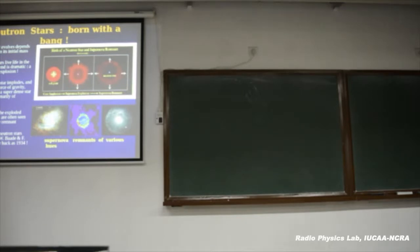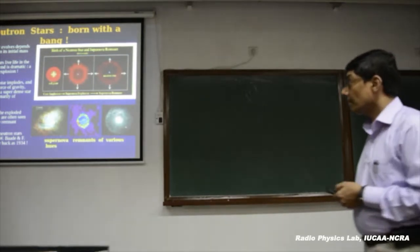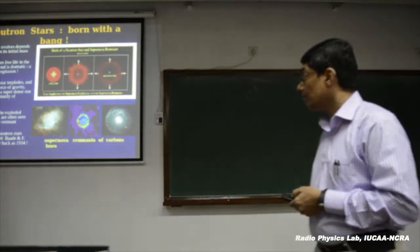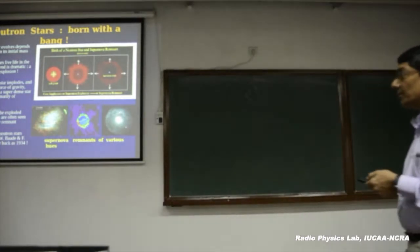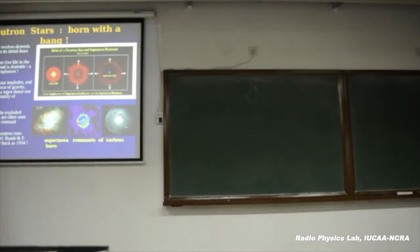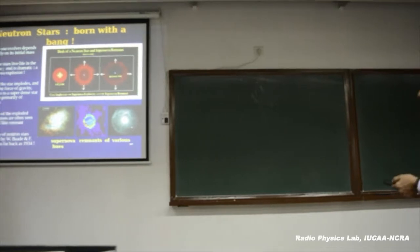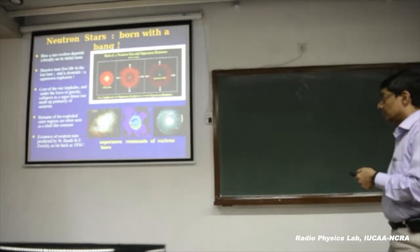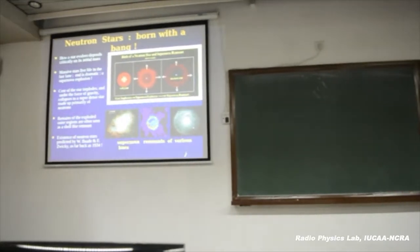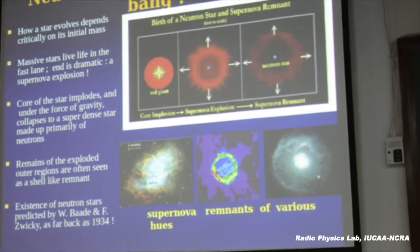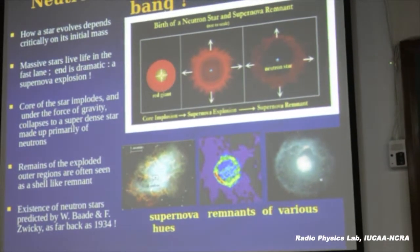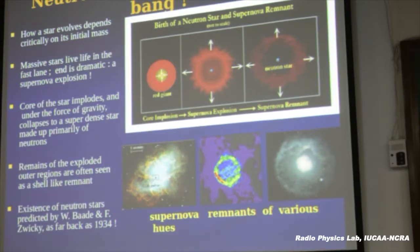Those images — are they in a variety of spectrum or just optical? Yes, they are. This is for example an optical image of the Crab Nebula. This is an x-ray image of a supernova remnant, just to show that they do emit in different energy bands.